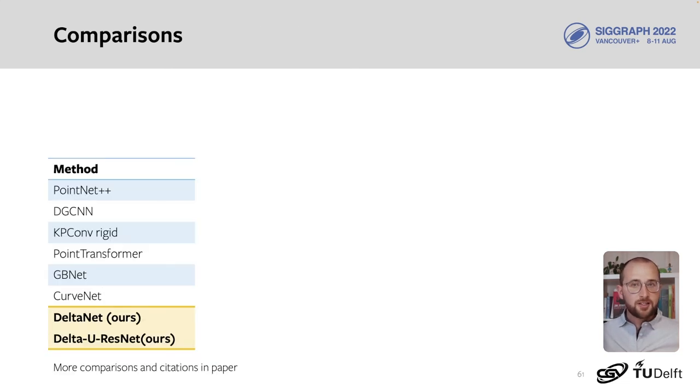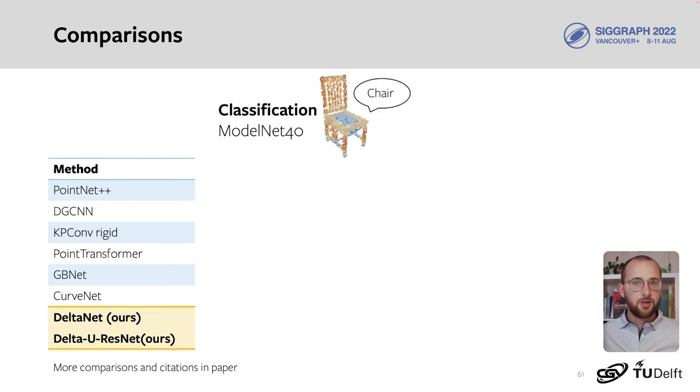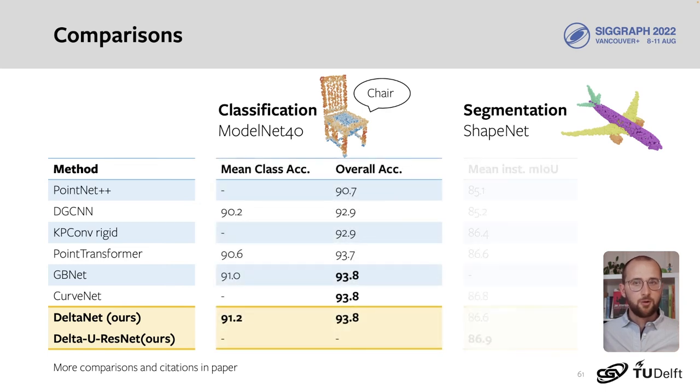Of course, we are curious how DeltaConv compared to recent state-of-the-art approaches on classification with ModelNet 40 and segmentation on ShapeNet. Often these networks use more complex network architectures and techniques such as self-attention. Even then, DeltaConv is on par or better than the state-of-the-art, showing that it pays off to be aware of geometric constraints.